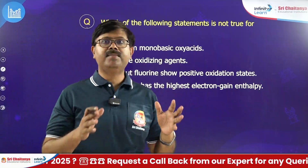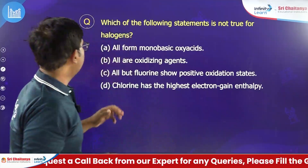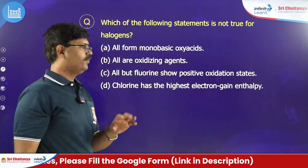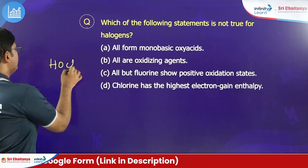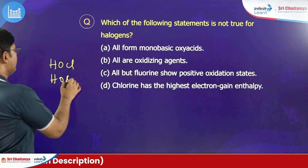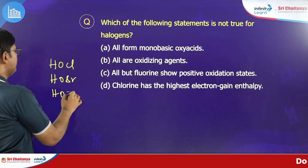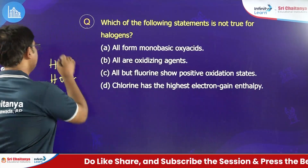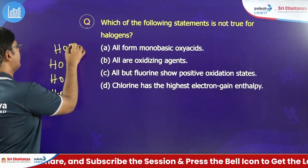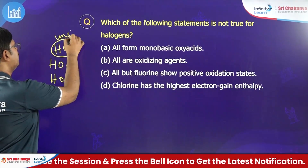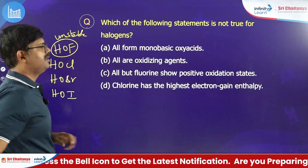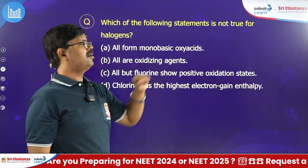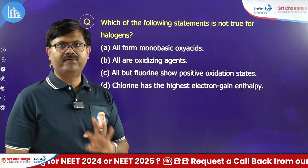Which of the following statements is not true for halogens? First: all form monobasic oxy acids — HOCl, HOBr, HOI are the monobasic oxy acids. However, HOF is highly unstable and easily breaks down. Therefore the statement that all halogens form monobasic oxy acids does not hold, since HOF does not fit.